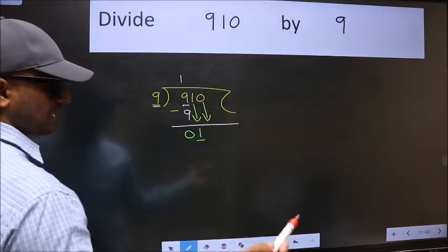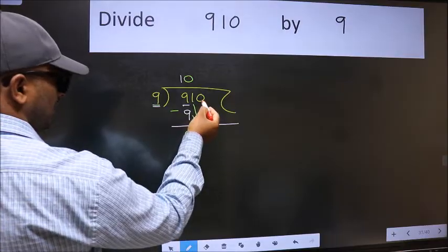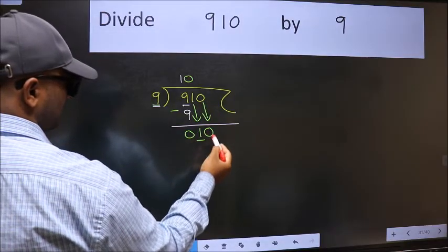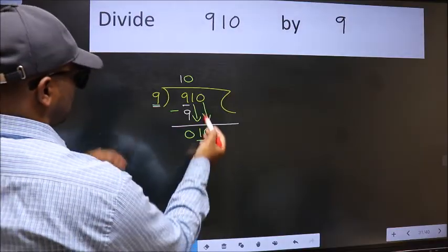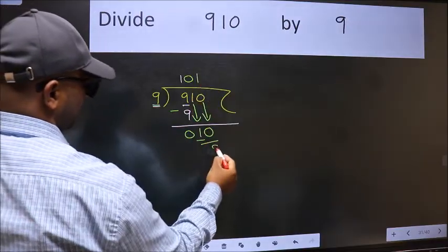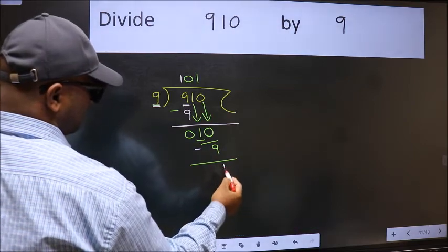And the rule to bring down second number is we should put 0 here. Then only we can bring this number down. Now 10. A number close to 10 in 9 table is 9 ones 9. Now we should subtract. We get 1.